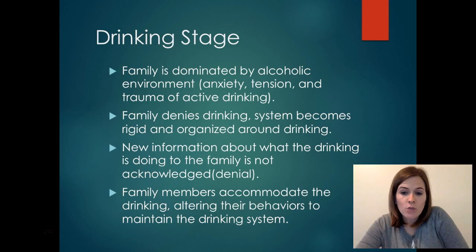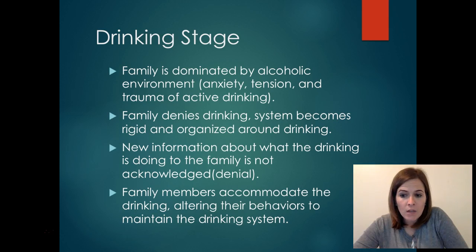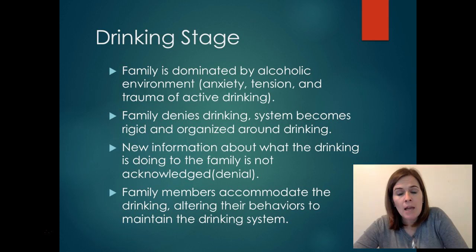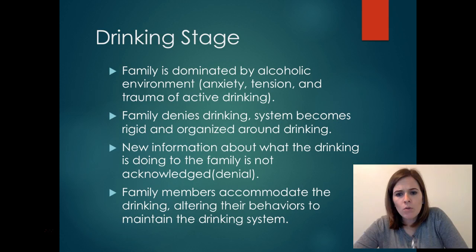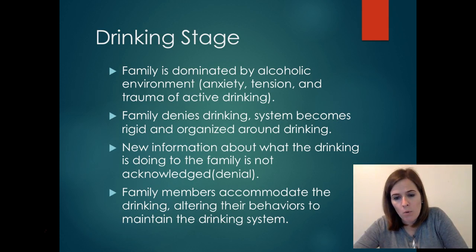Family members are going to be accommodating the drinking, altering their behaviors to maintain the drinking system. For example, if a couple owns their own business and the husband has an alcohol problem and he's so drunk he can't get up to open the business, maybe the wife goes and does that. It makes sense for her because it's her livelihood as well, but we see how that also accommodates and enables him in his drinking. This comes fairly naturally for family members — they will do things that allow the person to drink, but a lot of this is for their own survival.